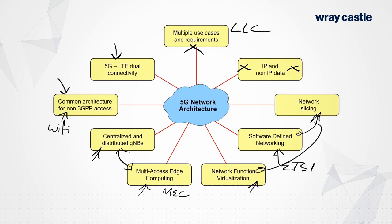The 5G network makes no such assumption. Whilst you can do IPv4 and IPv6, we also support the transport of Ethernet — effectively a layer 2 process — or maybe just some unstructured data where we don't know what it is. It could be some sort of proprietary IoT protocol that doesn't use IPv4 or Ethernet. So we support multiple data structures that can be passed across the network.